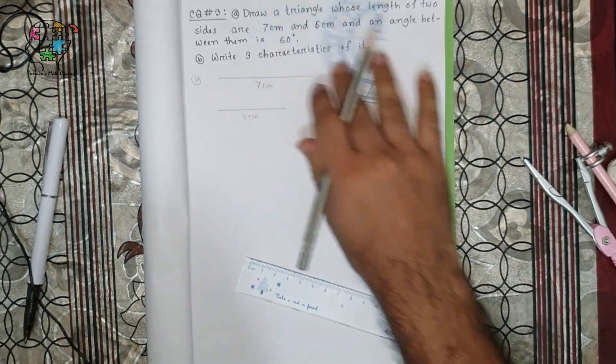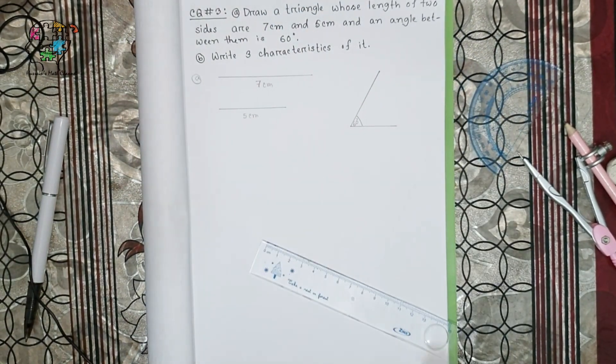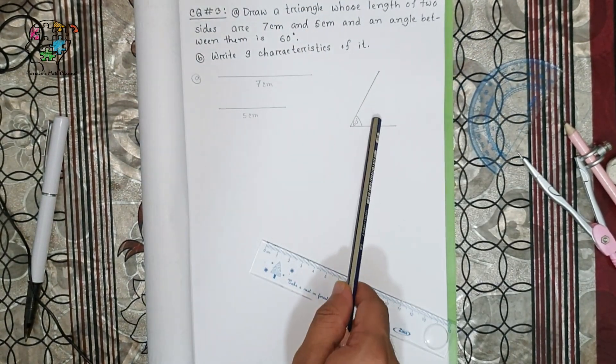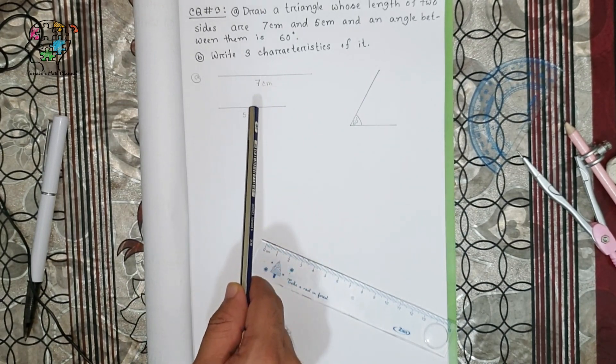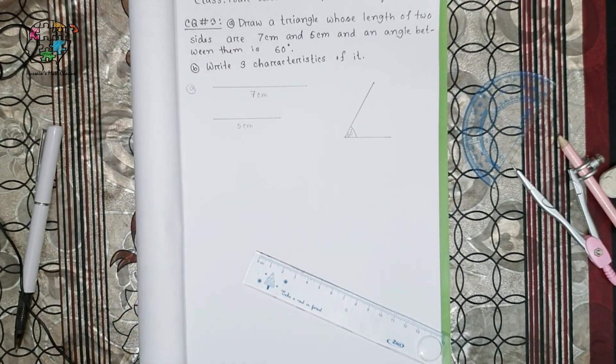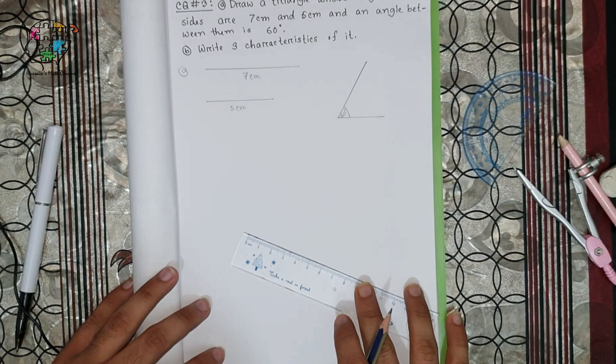All right. So this is the given question — one angle of 60 degrees and two sides which are 7 centimeters and 5 centimeters. Now we draw our required triangle here.